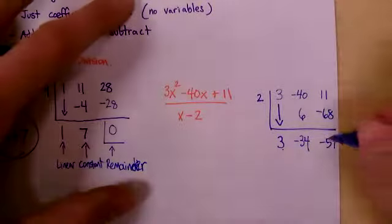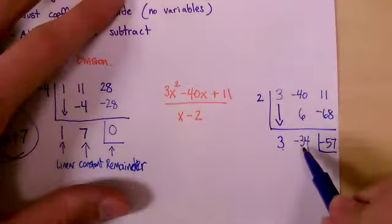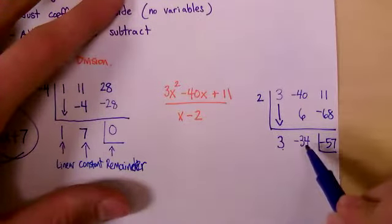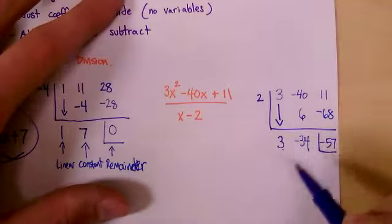Now we have to rewrite this. First number is our remainder. We have a remainder on this one. This is our linear term. This is, sorry, this is our constant term. This is our linear term. So it's going to be 3x-34 for that part.